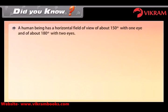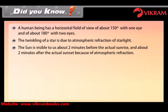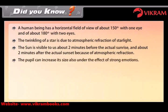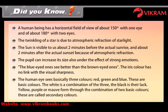A human being has a horizontal field of view of about 150 degrees with one eye and about 180 degrees with two eyes. The twinkling of a star is due to atmospheric refraction of starlight. The sun is visible to us about two minutes before the actual sunrise and about two minutes after the actual sunset because of atmospheric refraction. The pupil can also increase its size under the effect of strong emotions. The human eye sees basically three colors: red, green, and blue — these are the basic colors.